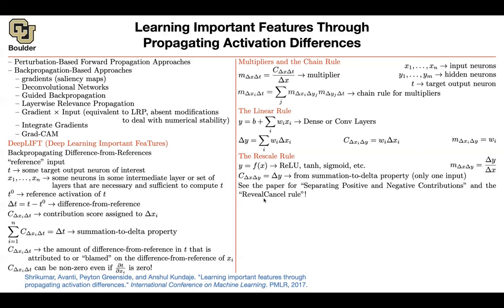You can extend this to the case where you have positive and negative contributions — c positive and c negative. You can change the way you do your ReLU rule, calling it the reveal-and-cancel rule. That's too much into the details; you can read the paper for that. The focus here is on the big picture and the idea of backpropagating these m's. Whenever you have a simple linear layer, you use that rule; for a nonlinear layer, you use the other m. Then you backpropagate using the chain rule.